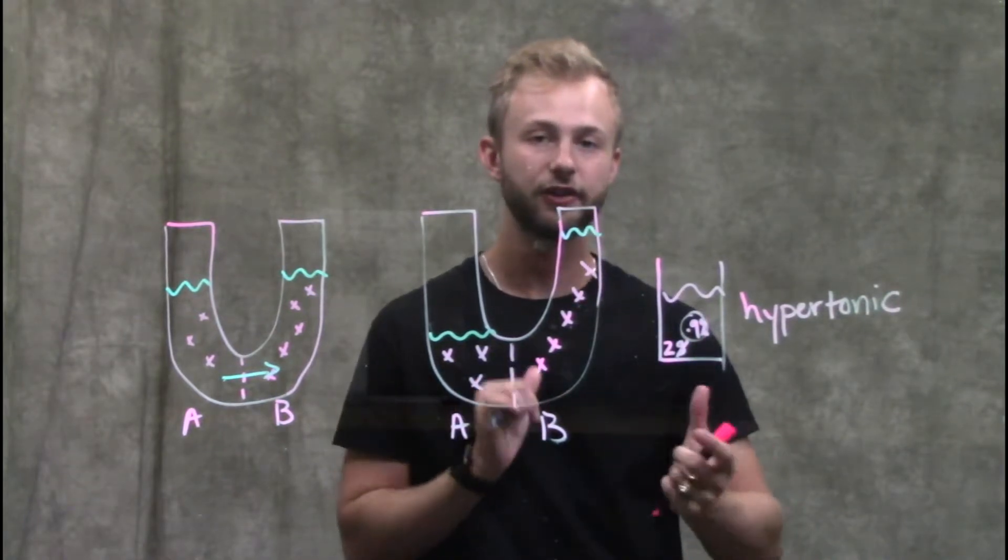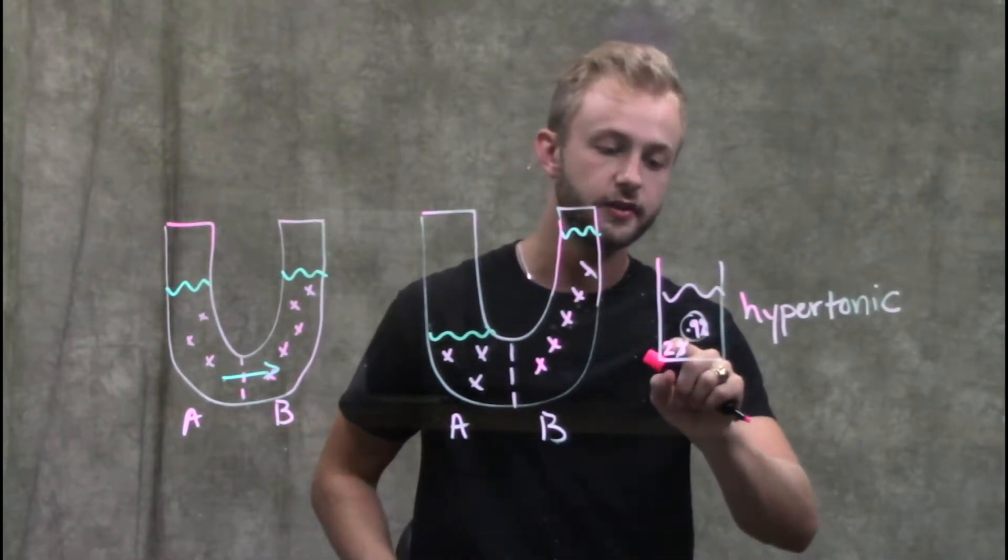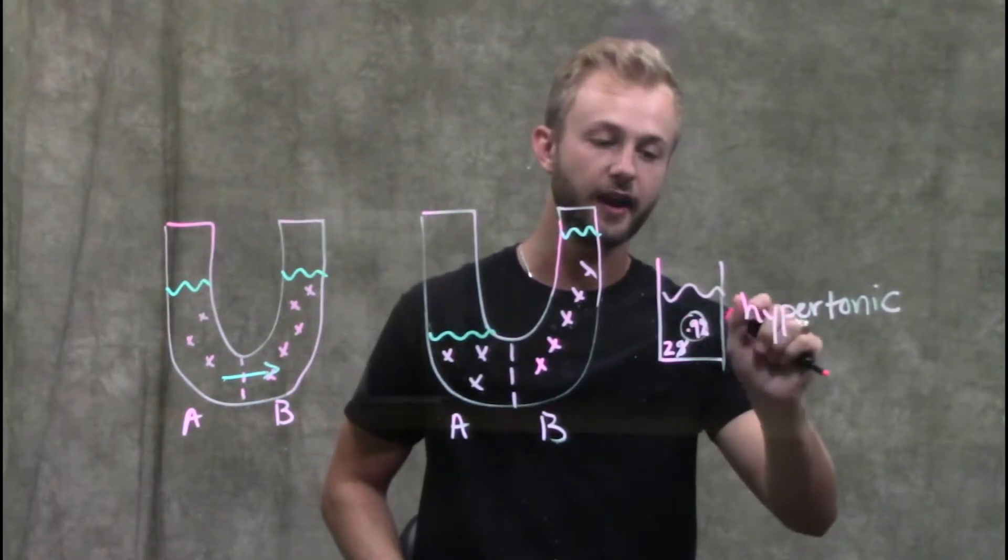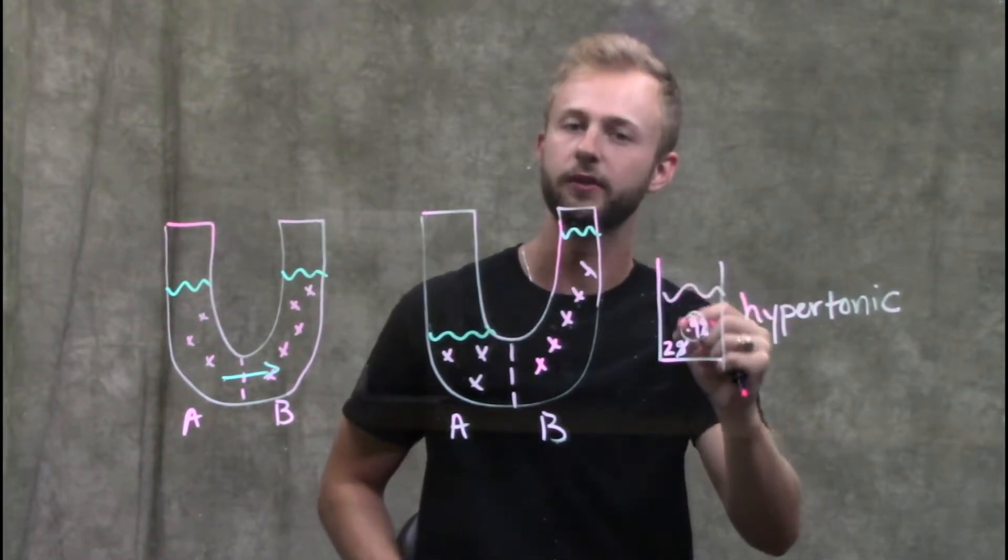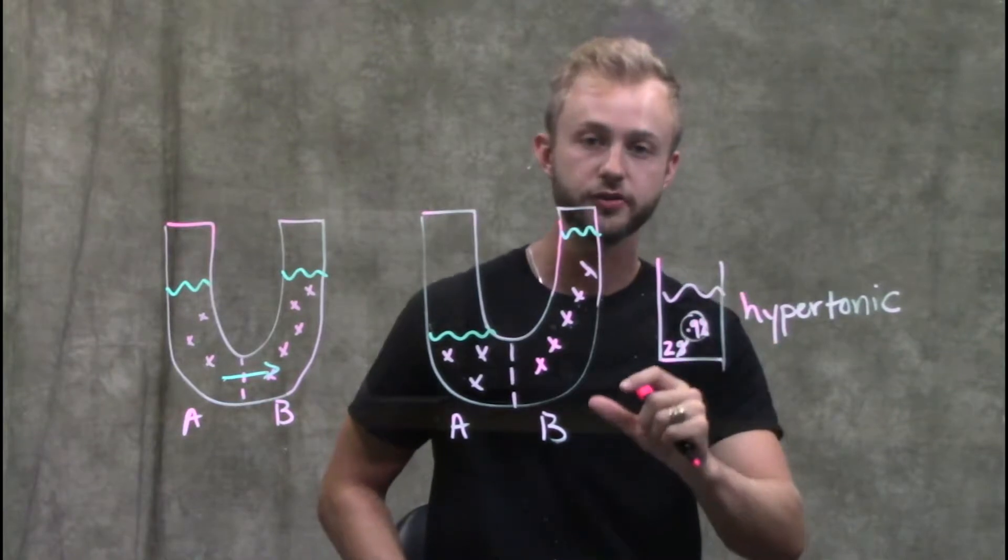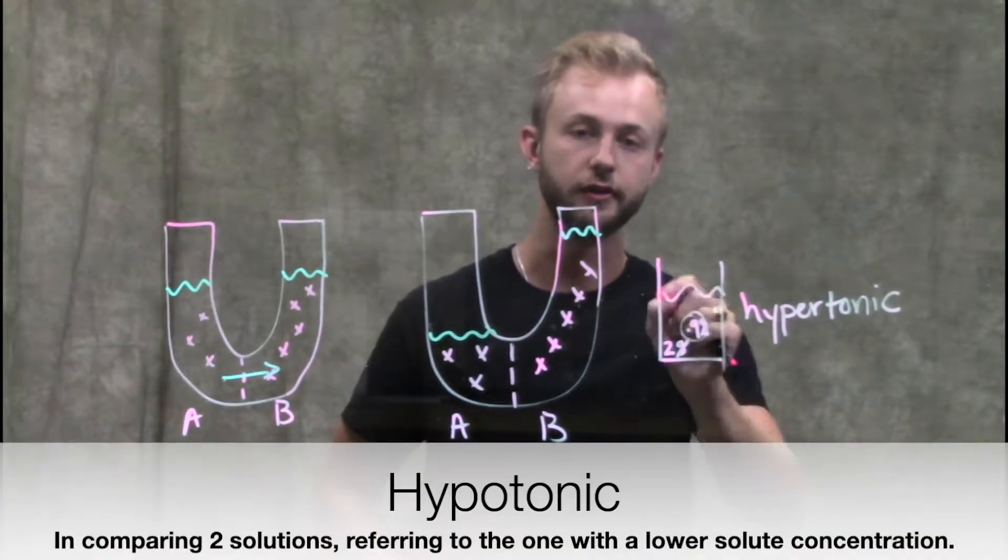There's also two ways you can look at these situations. The outside solution is hypertonic to the inside of the red blood cell, but the inside of the red blood cell is hypotonic to the solution on the outside.